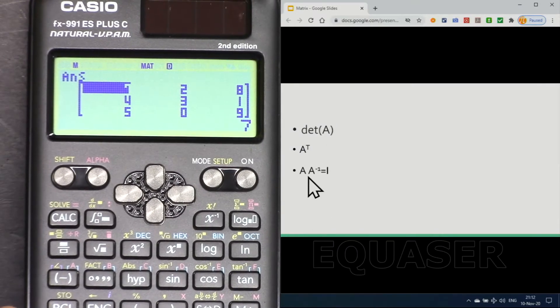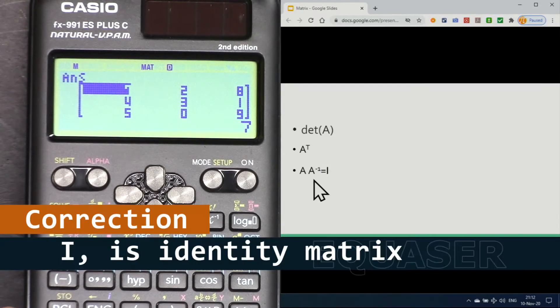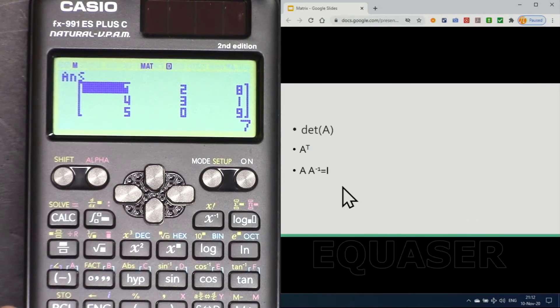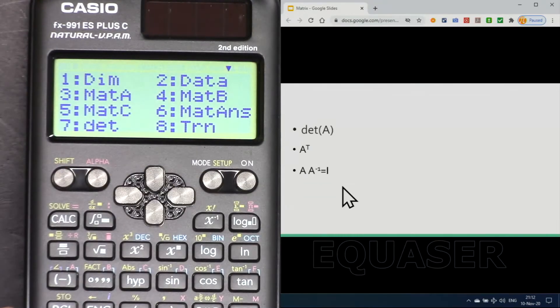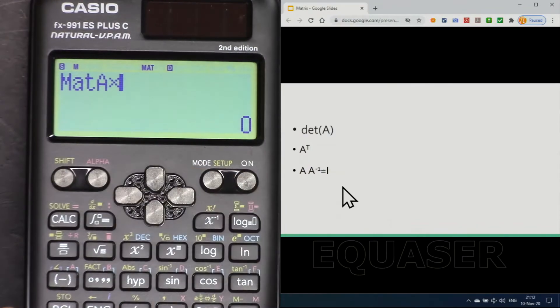And we know the identity matrix. If you get the matrix multiply by the inverse of a matrix, the answer will be identity matrix. Let's see how we can do that here. Shift matrix 3, matrix A times shift matrix.